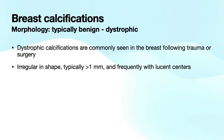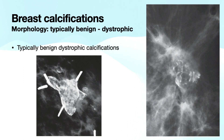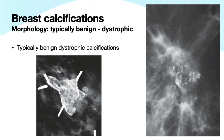Next, we're going to move on to dystrophic calcifications. Dystrophic calcifications are commonly seen in the breast following trauma or surgery. They are irregular in shape, typically greater than one millimeter in size, and they frequently have lucent centers. Here are two examples of typically benign dystrophic calcifications. You can see these are almost certainly related to the trauma of surgery given that there are surgical clips present. And here again, you can see thin benign calcium deposited in the wall, probably of an oil cyst — again, likely post-traumatic on the right example.